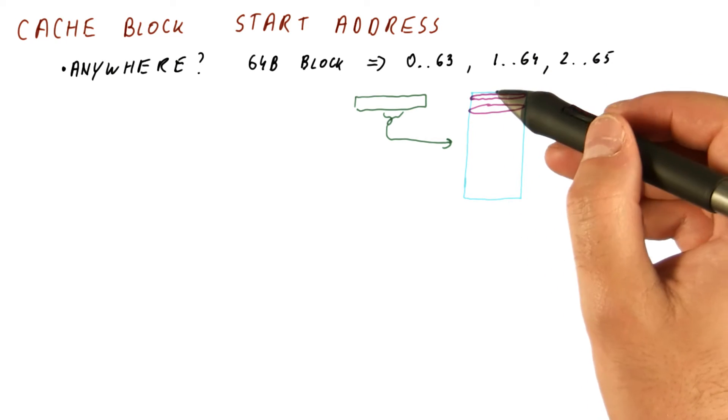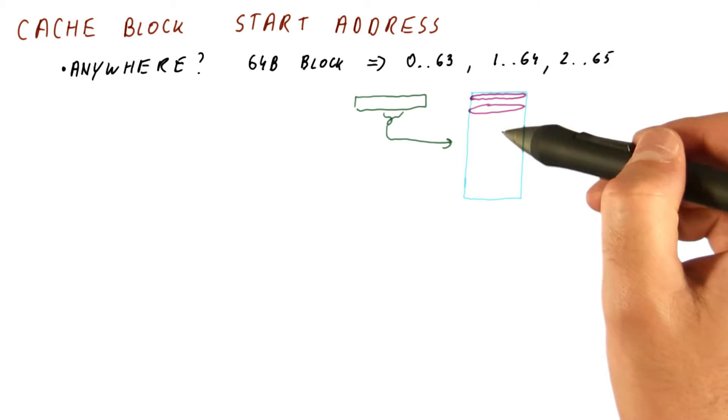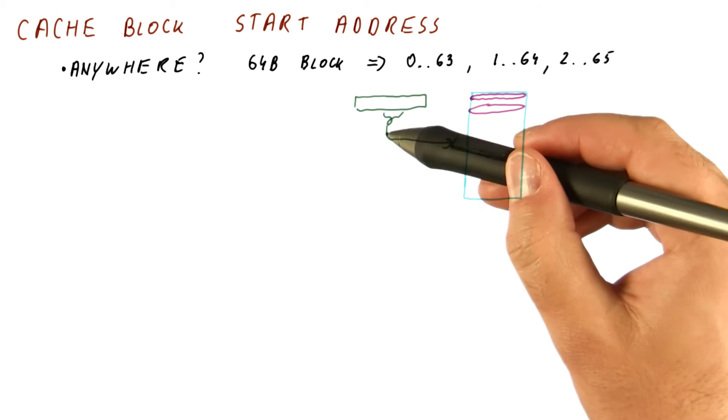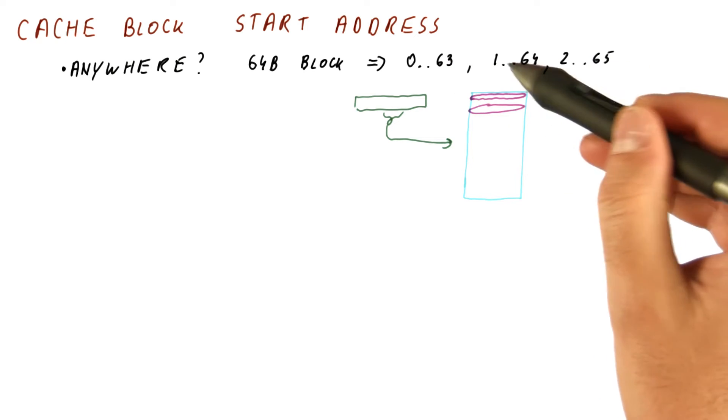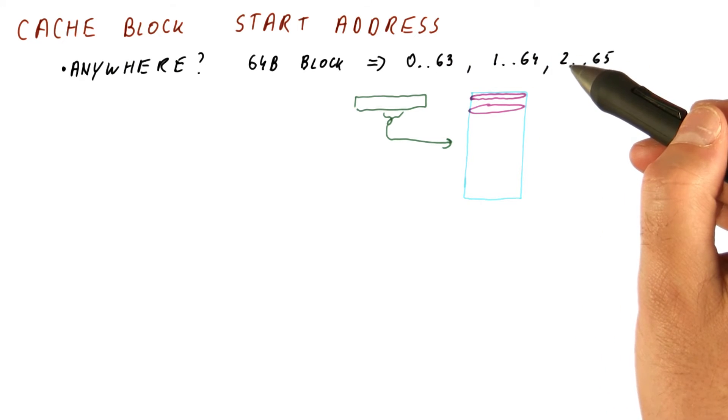Block 1 through 64 might map somewhere else in the cache, and so on. So basically, there are many possible places where the address 27 might be, simply because each of these blocks might map somewhere else, depending on what its beginning address is.